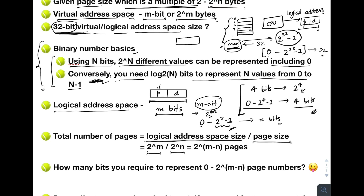The page numbers start from 0 and go up to 2^(m-n) minus 1. Taking log base 2 of this, we get that m minus n bits are required to represent the page number. Since the total bits needed is m and the page number takes m-n bits, the remaining n bits are required for the offset. So: m-n bits for page number, and n bits for page offset.